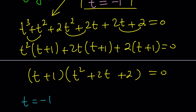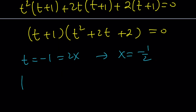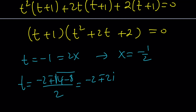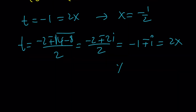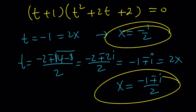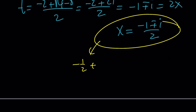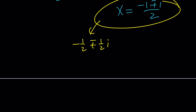T equals negative 1 equals 2x, giving x equals negative 1 half. Using the quadratic formula on T squared plus 2T plus 2 equals 0: T equals negative B plus or minus the square root of B squared minus 4AC, where 4AC equals 8, giving negative 2 plus or minus the square root of negative 4, which is 2i. Divide by 2 to get T equals negative 1 plus or minus i. Since T equals 2x, divide by 2 to get x equals negative 1 plus or minus i, all over 2, or written as negative 1 half plus or minus 1 half i. So there are three solutions: one real and two complex.